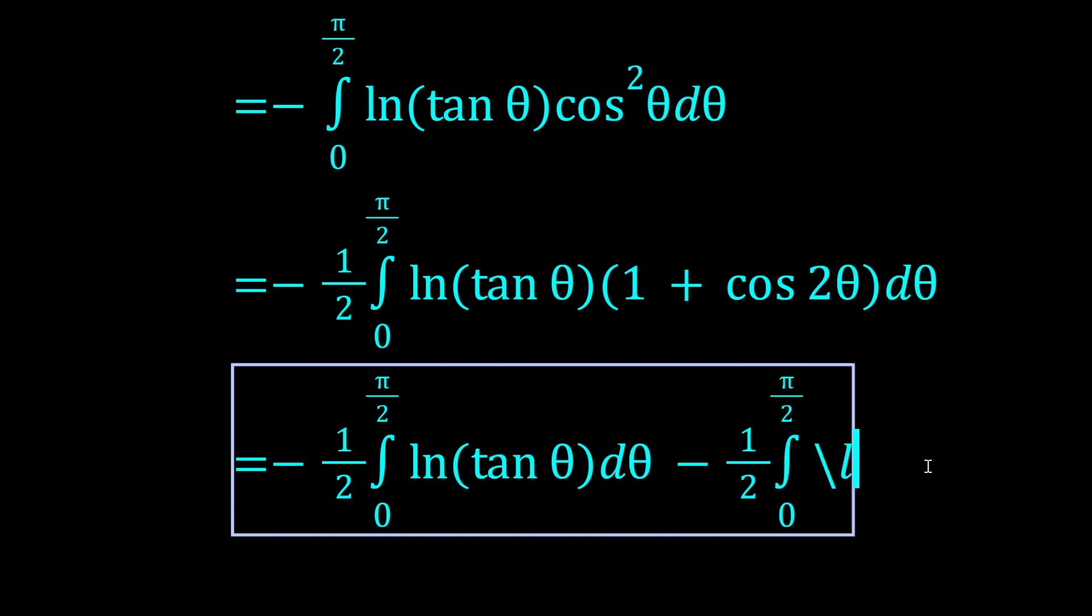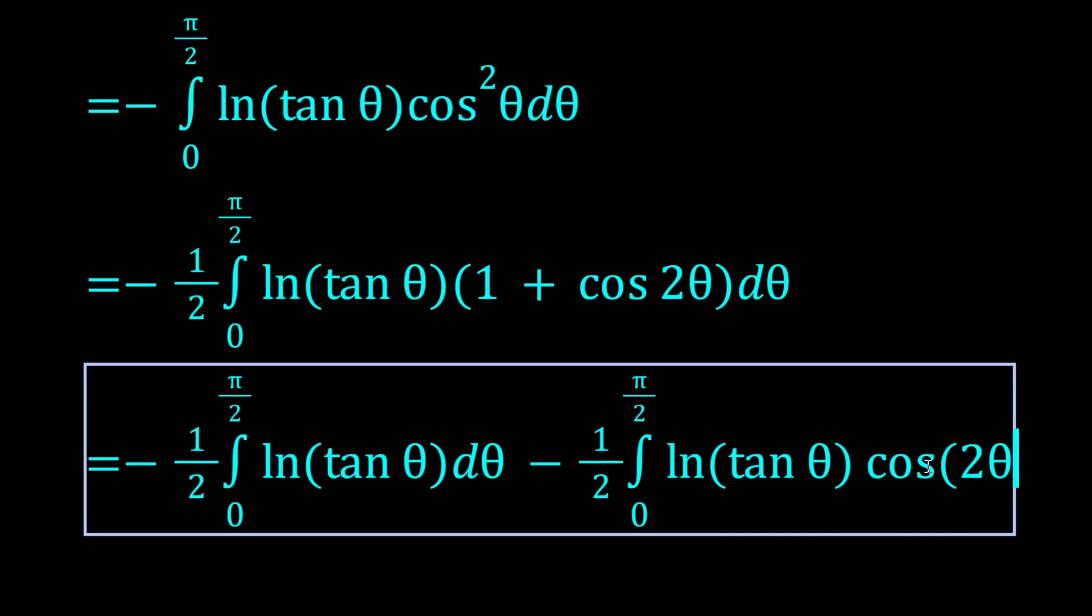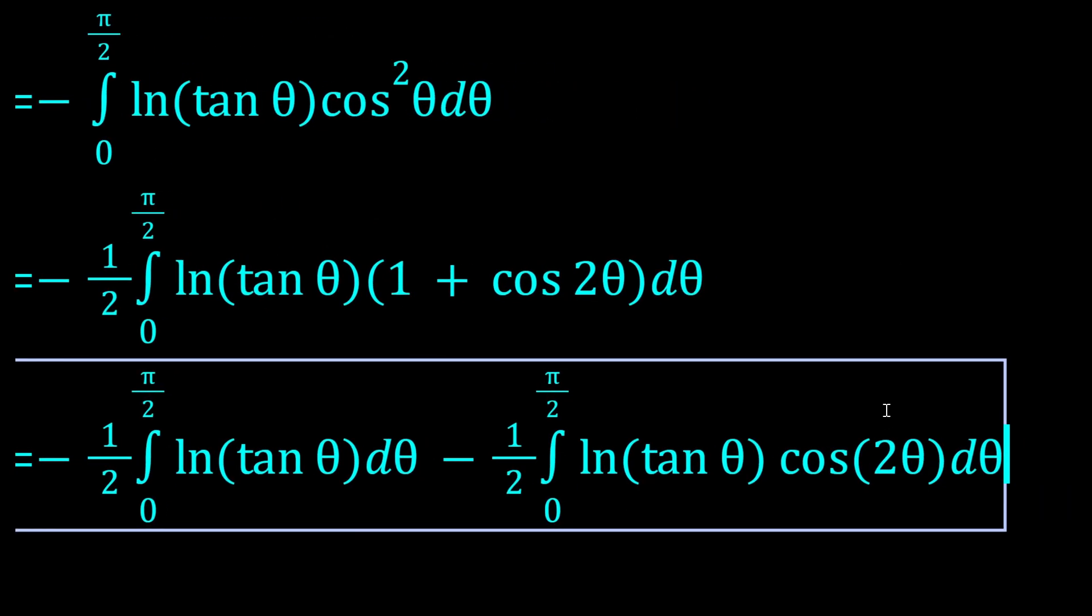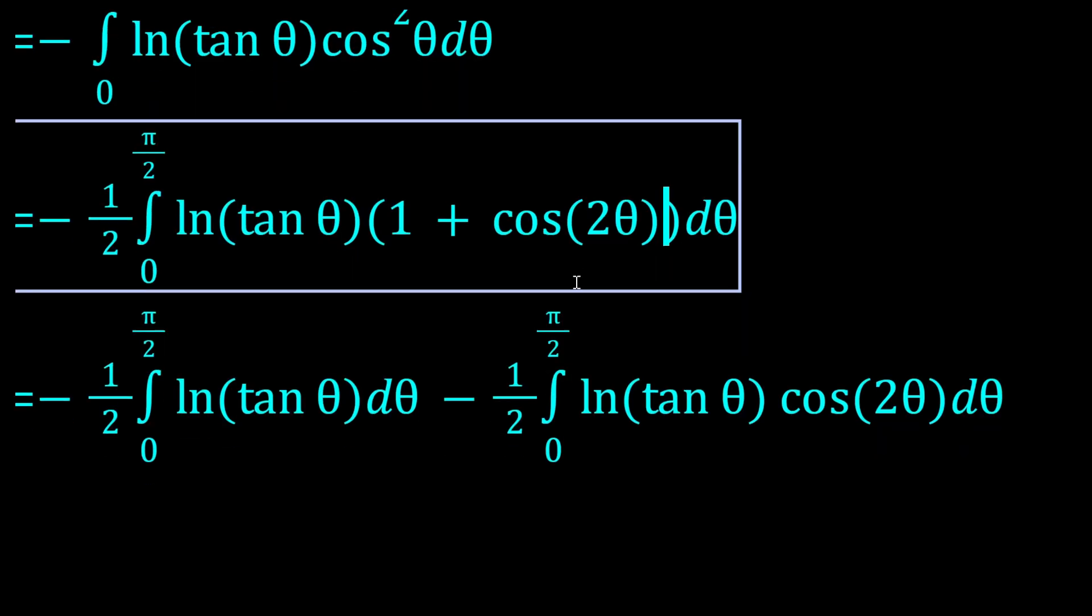And now we can split up the integral. Okay, so all we did there was just double angle, by the way. Cos² can be written as ½ times (1 + cos 2θ). And now that we've split it up, we'll look at this first integral that we have.